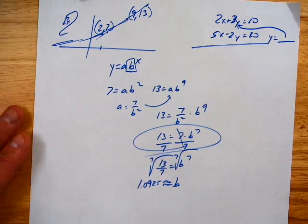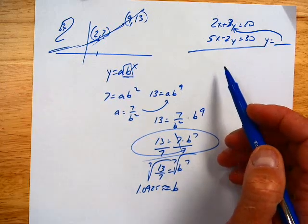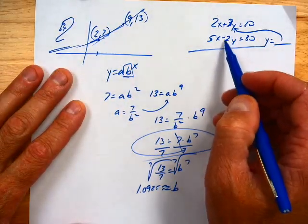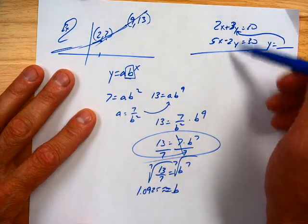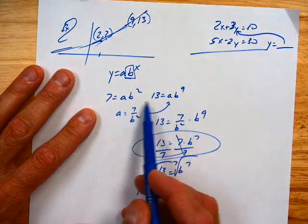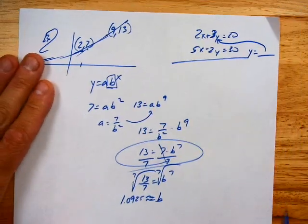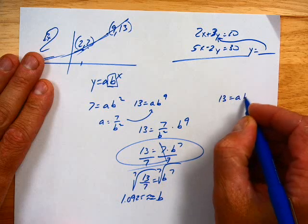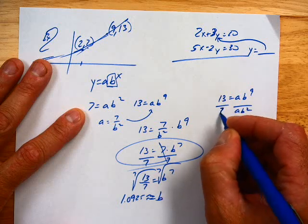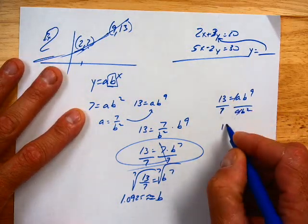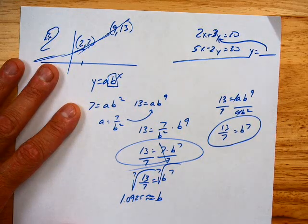So this is using a substitution method. Could we also do something like this and use an elimination method? We could. This is addition or subtraction. Here it's multiplication. So instead of add these together, what should we do with these? We're actually going to divide because then it'll cancel some things. So if I go over here to the side, I can go 13 equals AB to the 9th, divide this side by 7, divide this side by AB to the 2nd. And then look at what I get. My As are gone. I get 13 sevenths equals B to the 7th, and I'm right back to where I was.